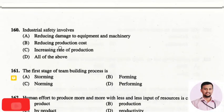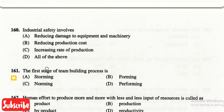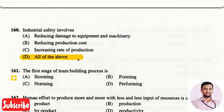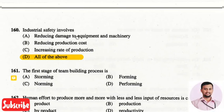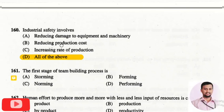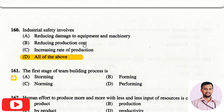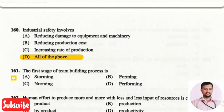The next question is: industrial safety involves? The right answer is all of the above. Industrial safety involves reducing damage to equipment and machinery, reducing the production cost, and increasing the rate of production. All these parameters are considered as industrial safety.